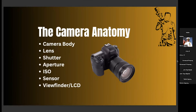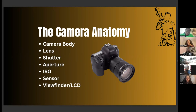First thing: camera anatomy. We have your camera body — I have an example here. This is a camera body. There are different types of cameras; this is mainly a photography camera but it also does video. We have your lens — this is the lens right here. With the camera body, we have the shutter, aperture, ISO, sensor, and your viewfinder.